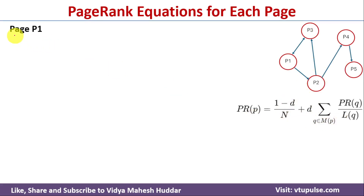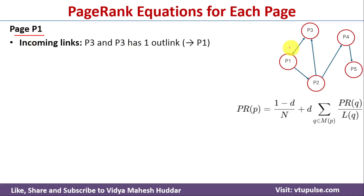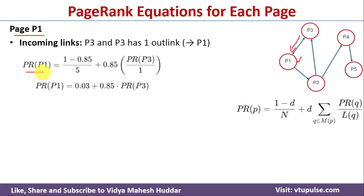First, we find the page rank of P1. The incoming link to P1 is from P3 only, and P3 has one outbound link — to P1. So: PageRank(P1) = (1 - 0.85) / 5 + 0.85 × [PageRank(P3) / L(P3)]. Since (1 - 0.85)/5 = 0.03 and L(P3) = 1, this simplifies to: PageRank(P1) = 0.03 + 0.85 × PageRank(P3).